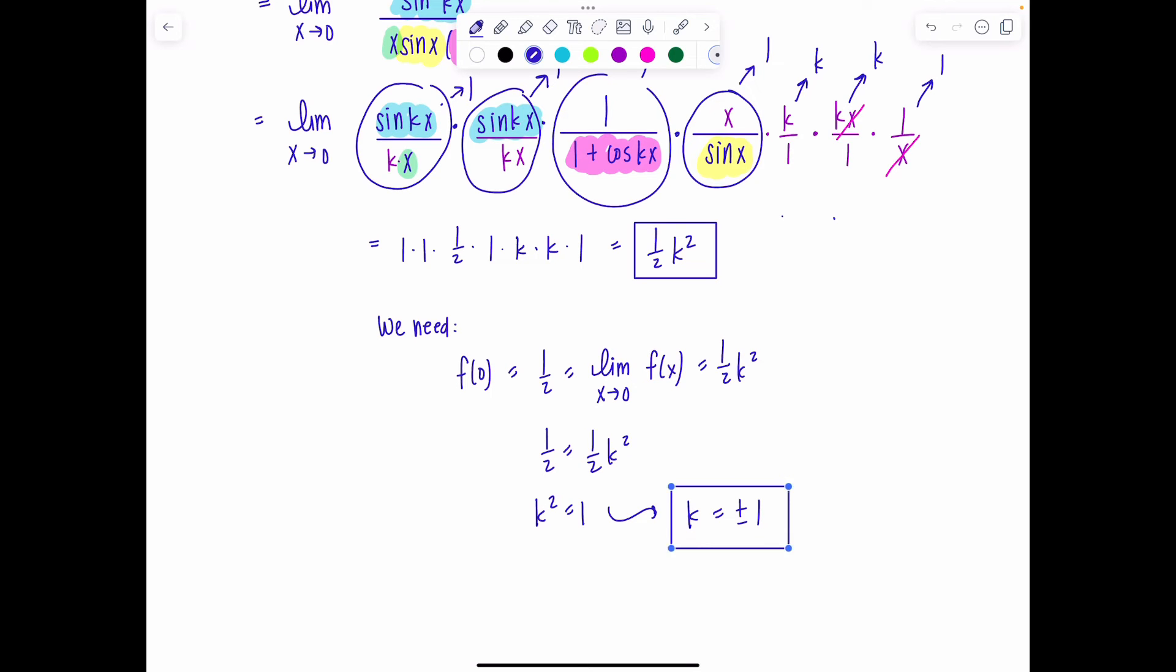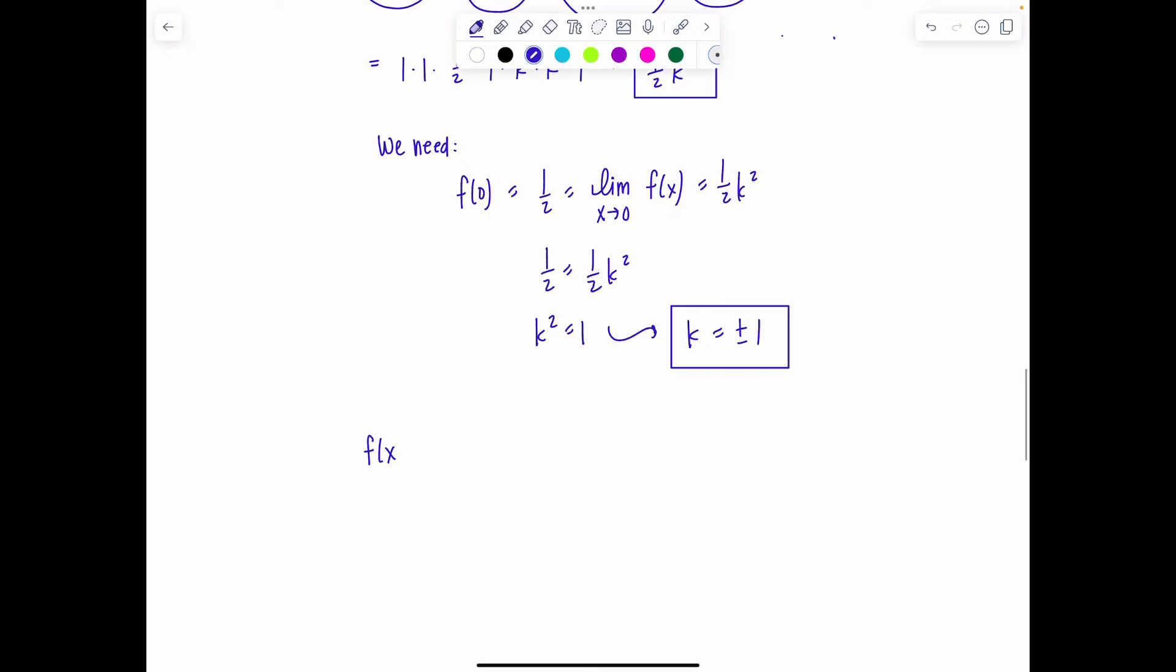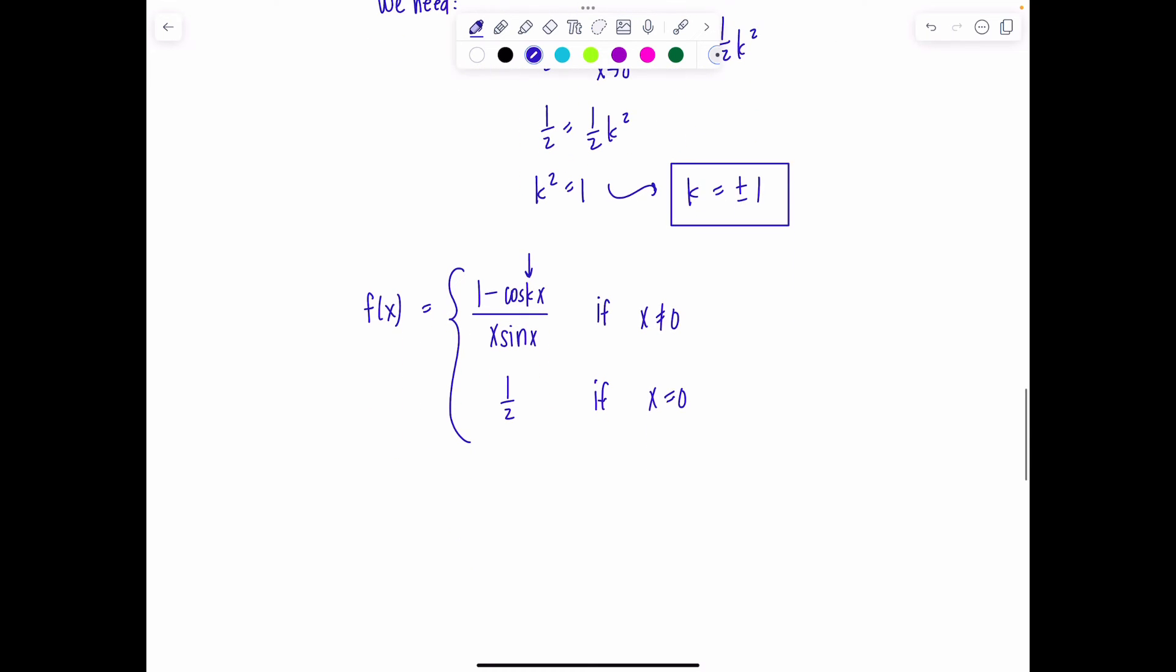Both values work. The negative one, if you look back, if we were to put it into the original function, let me rewrite the piecewise function here. It was (1 - cos(kx))/(x sin x) if x is different from zero, and then 1/2 if x is zero. If I plug in one, this would be (1 - cos x)/(x sin x). If you plug in negative one, cosine is an even function. So by definition, cos(-x) equals cos(x). So they simplify to the same result. But both values of k are valid in terms of a solution.